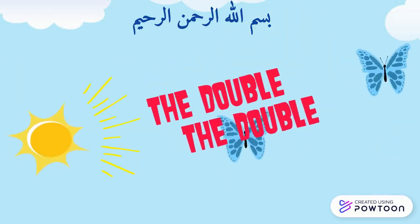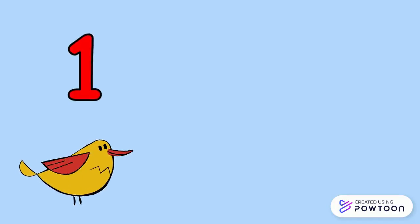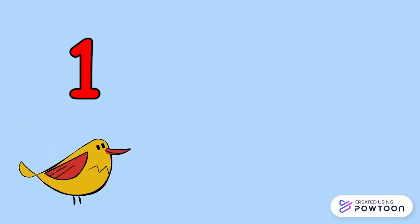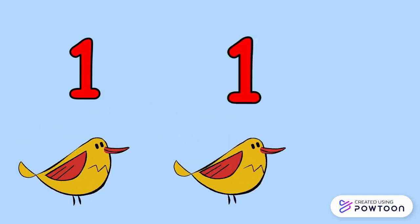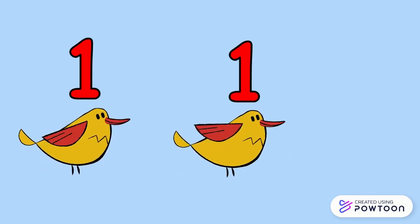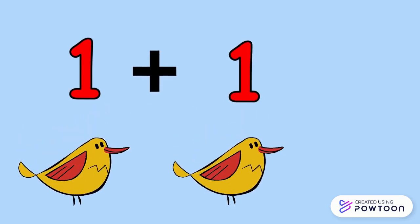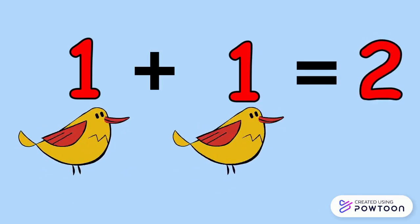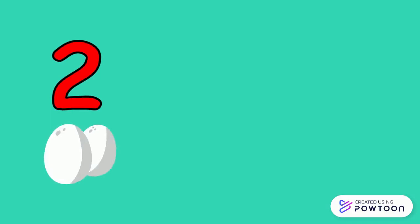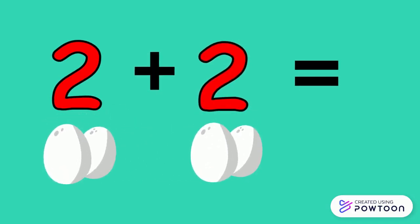The double of a number is to repeat the same number twice. The double of 1 is 2 — 1 plus 1 equals 2. The double of 2 is 4 — 2 plus 2 equals 4.